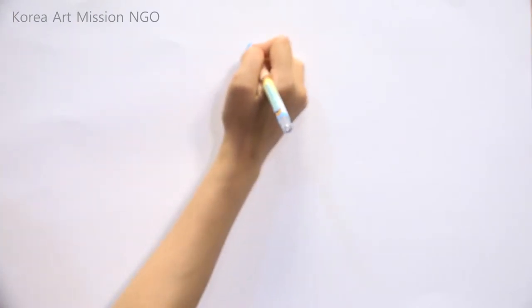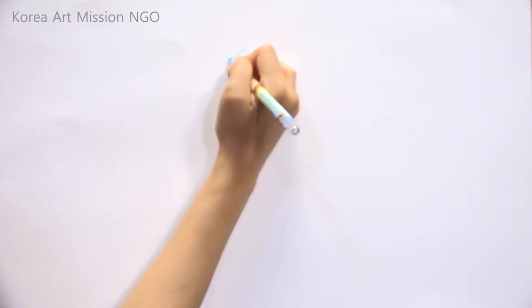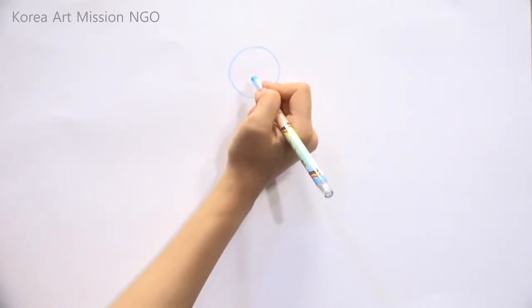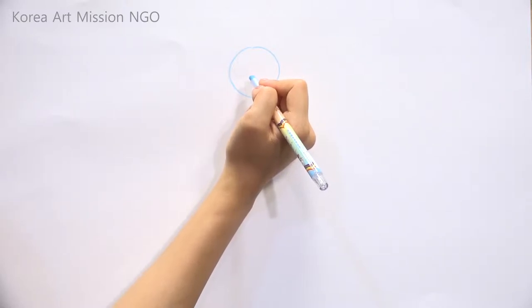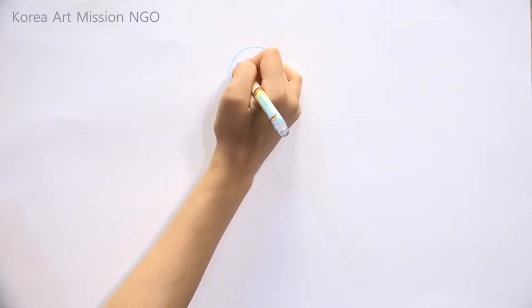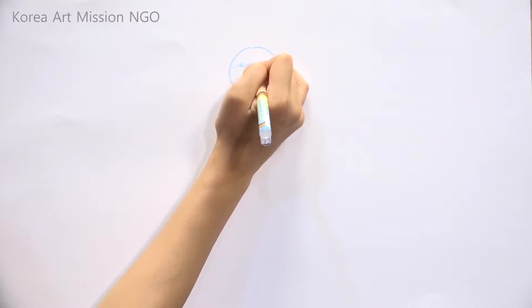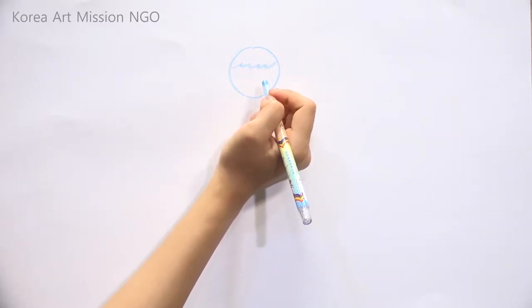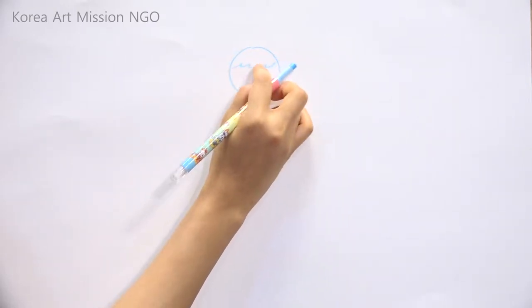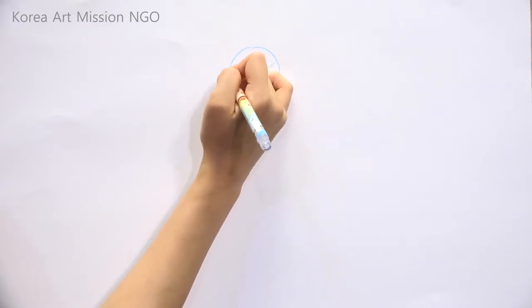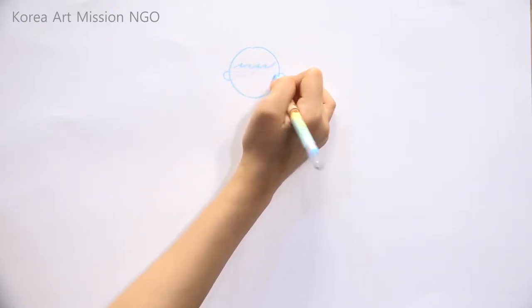I'm going to draw a boy today. First, draw his face like a circle. I'm going to draw the boy's head, but this time not like a girl's head. Draw his head with little lines and draw the ears as small circles.